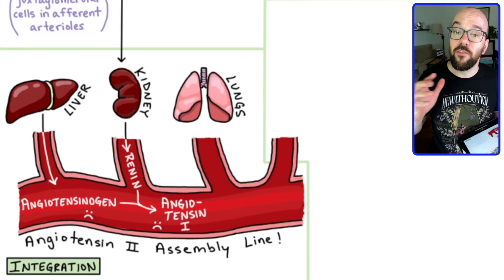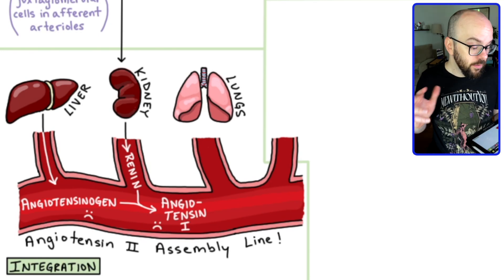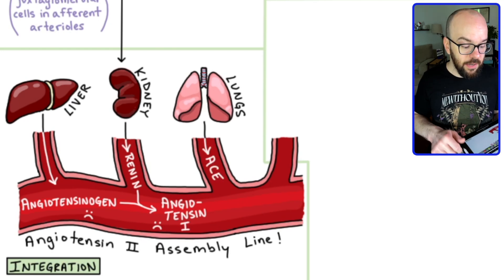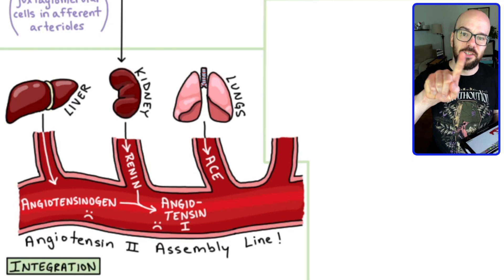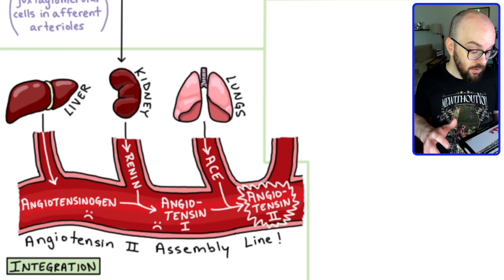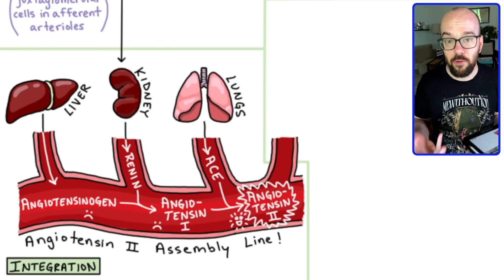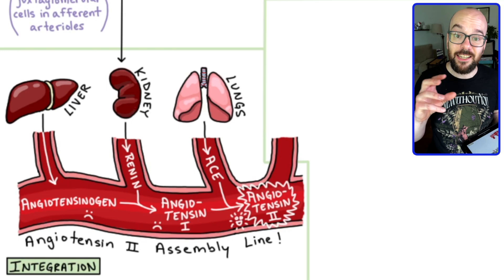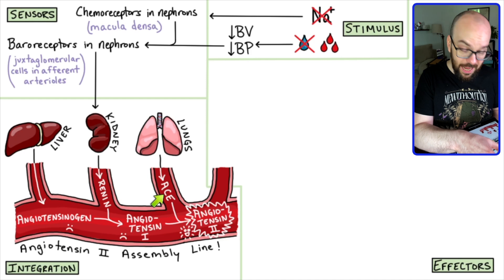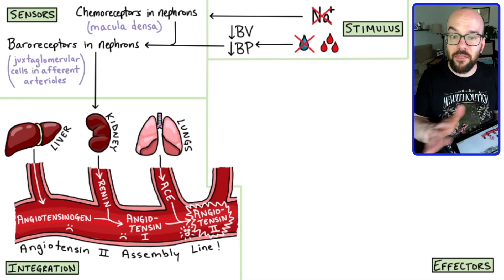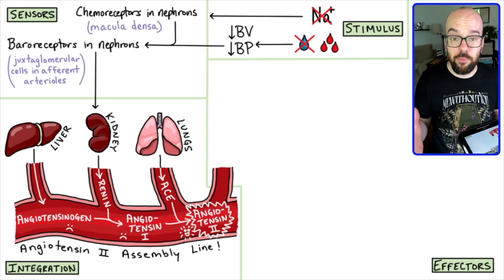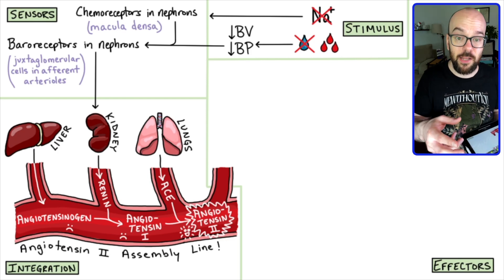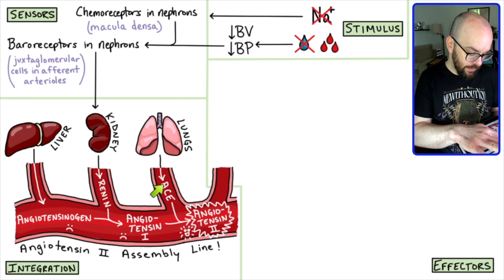Angiotensin I is still pretty inactive and won't have much effect throughout the body. We have to do another step and convert it into angiotensin II, which is the active hormone. That's done using the angiotensin-converting enzyme, or ACE, produced by the lungs. ACE converts angiotensin I into angiotensin II, which is very active and causes lots of effects throughout the body. You may have heard of an ACE inhibitor — that's a blood pressure medication that blocks ACE from converting angiotensin I to II, thereby blocking all the effectors that would raise blood pressure. It's a common treatment for chronic hypertension.